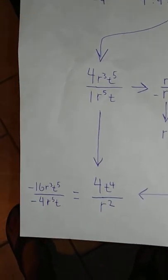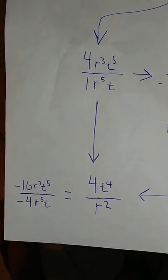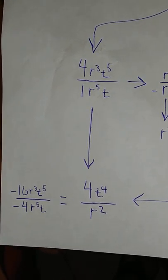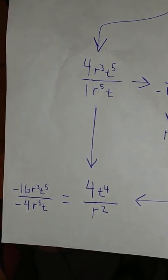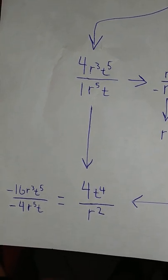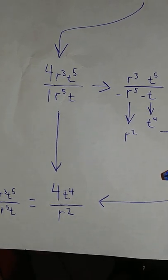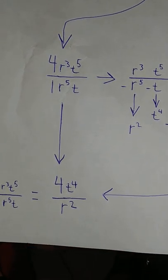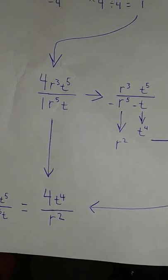In the end, negative 16r3t5 over negative 4r5t equals 4t to the power of 4 over r to the power of 2.